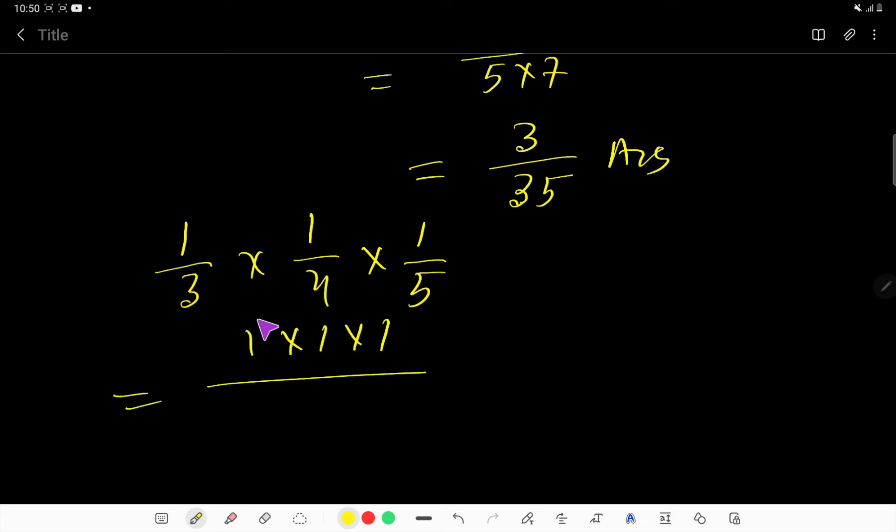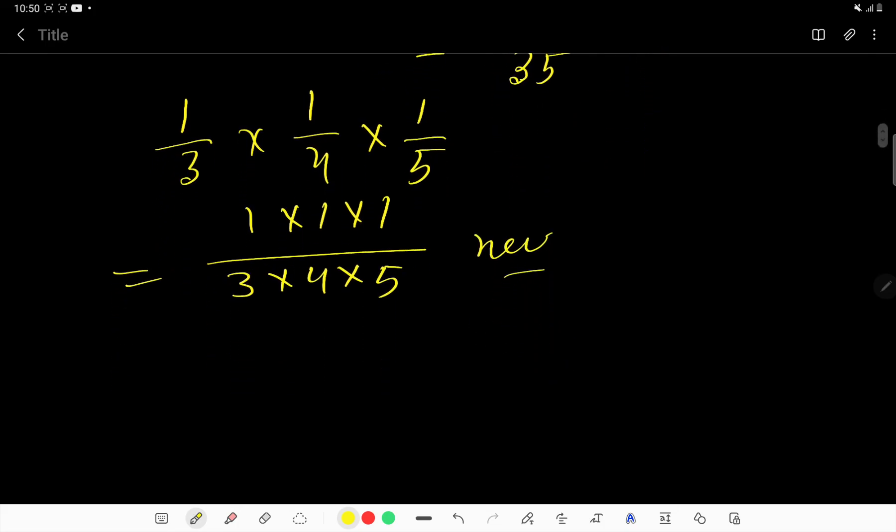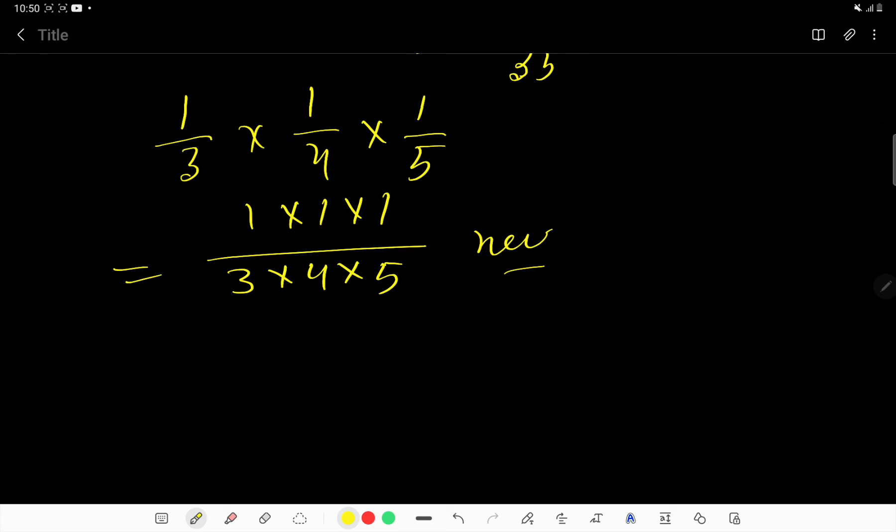You're getting a new fraction, and now you need to reduce or simplify. So 1 times 1 times 1 equals 1. And 3 times 4 is 12, times 5...